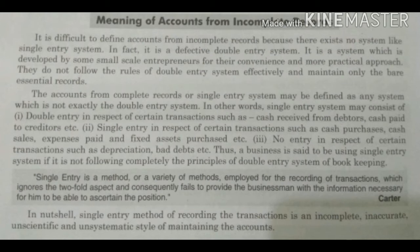सबसे पहले बात आती है कि हम accounting from incomplete record क्यों बनाते हैं। इसको हम single entry भी बोल सकते हैं जो double entry के बिलकुल opposite होता है। Double entry में हम proper rules को follow करते हैं — real account, personal account, nominal account, debit, credit — इन सबको follow करके अपने accounts prepare करते हैं। बट single entry इसके बिलकुल opposite है।